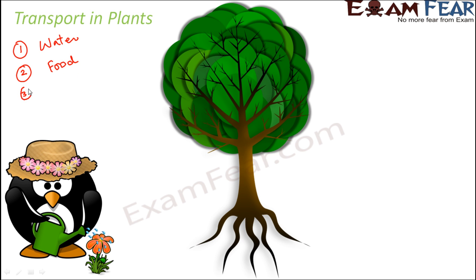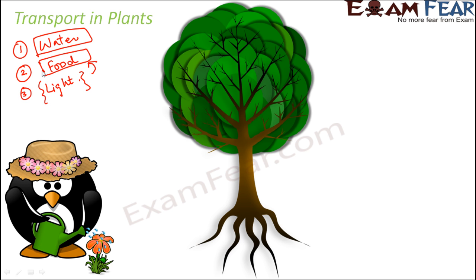In order to undergo photosynthesis, they also need light, chlorophyll, and carbon dioxide — all these things are needed for preparation of food. But when we talk about transport, water and food are two things needed by each and every part of the plant. Water is needed by the leaves, branches, stem, and roots. Similarly, every part of the plant needs food, which contains all types of nutrients needed by plants.